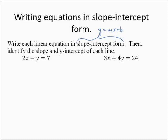Let's take the first example. I have 2x minus y equals 7. I want to isolate the y variable. The first thing I will do is subtract 2x from both sides. That would yield negative y equals negative 2x plus 7.